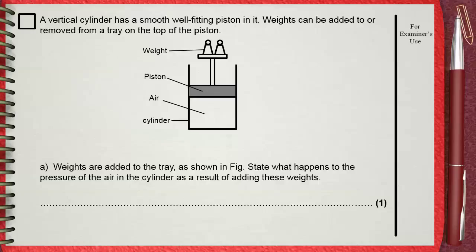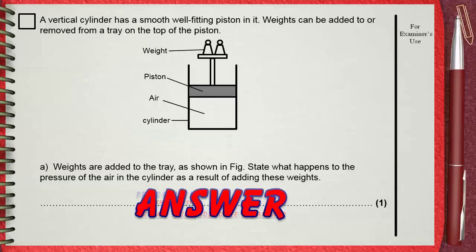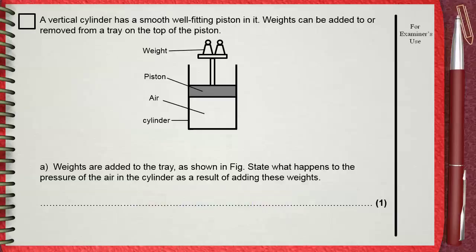Weights are added to the tray as shown in figure. State what happens to the pressure of the air in the cylinder as a result of adding these weights. Of course, if we add weights to the tray, the piston will go down and the volume will decrease. When the volume decreases, this means the pressure will increase.